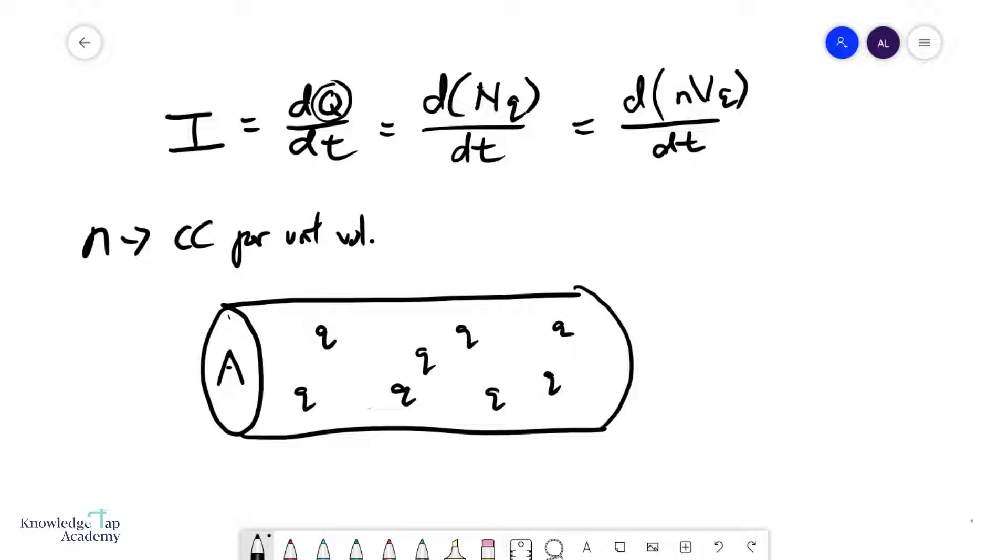And then, we can express the volume as the cross-sectional area A times some distance in this direction, x, q dt.